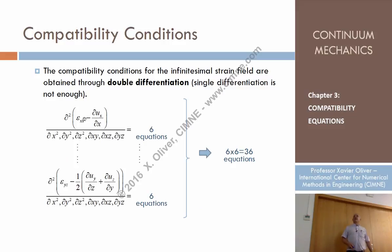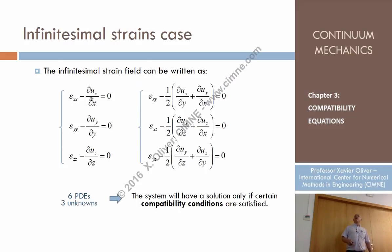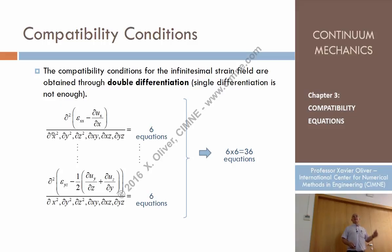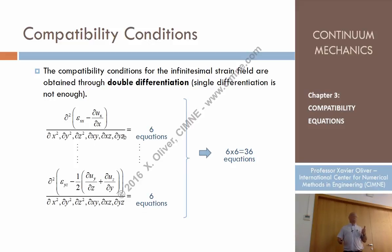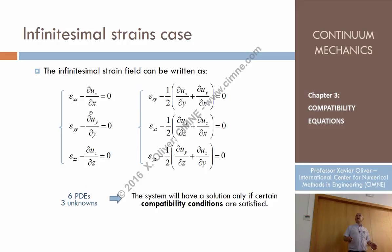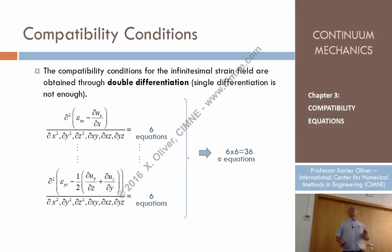Taking the first equation and all possible second derivatives with respect to x², y², z², xy, xz, yz — I don't include yx because it's the same as xy, and zx is the same as xz. So from the first equation I obtain six new equations. From the second equation another six, and from the sixth equation another six. In total, differentiating the six equations with respect to all second-order possibilities gives 6×6 = 36 equations.